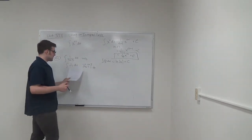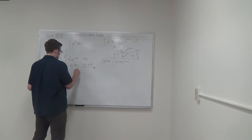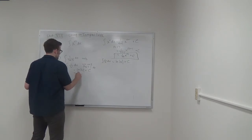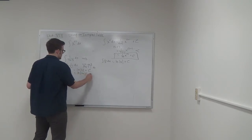So plugging this in, we can find that this is the natural log of u plus c, is equal to the natural log of the absolute value of x plus 3 plus c.